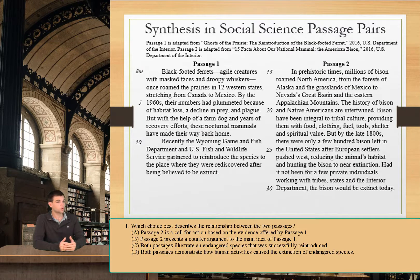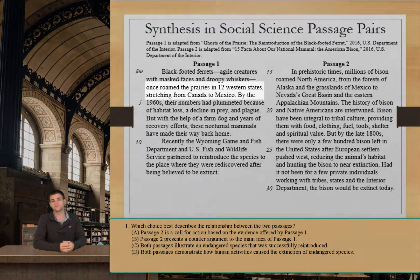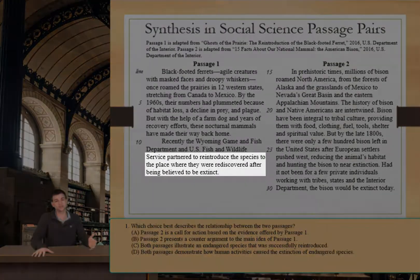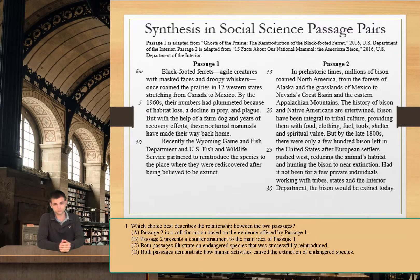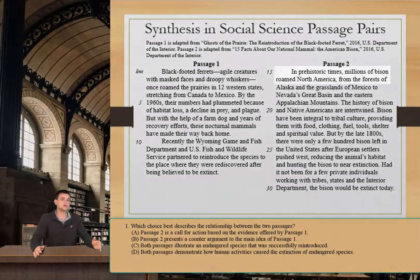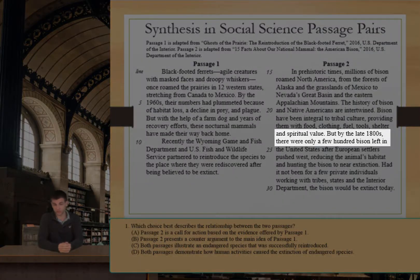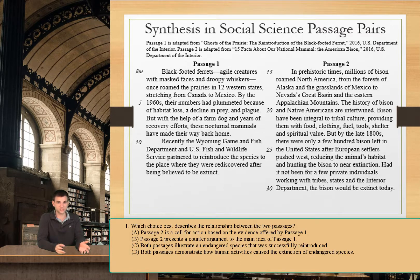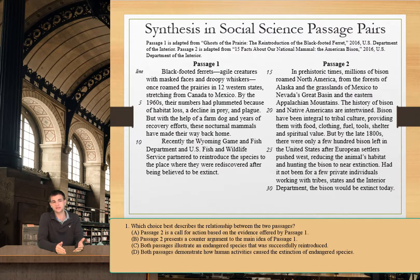In passage one, we're told about the black-footed ferret — that it used to have a large natural range, then nearly went extinct due to habitat loss, but was later successfully reintroduced to the wild in healthy numbers. Passage two tells us about the bison, which used to roam all over North America, was hunted nearly to extinction, and was also later successfully reintroduced to the wild. So the relationship between them could be described by saying that both passages provide an example of a species that nearly went extinct but was later successfully reintroduced.